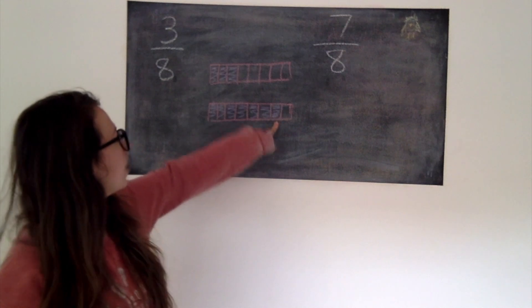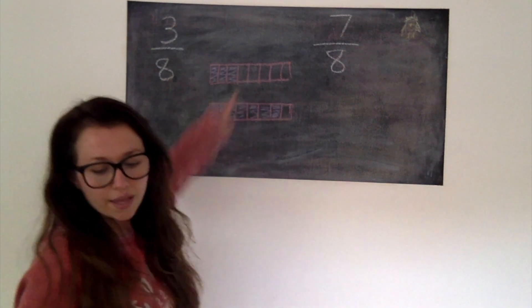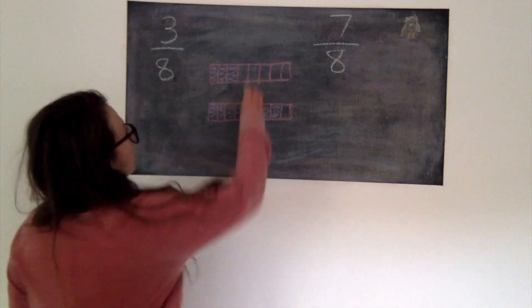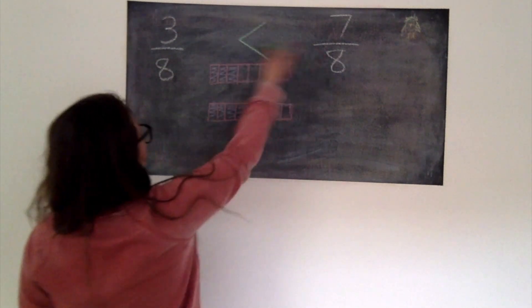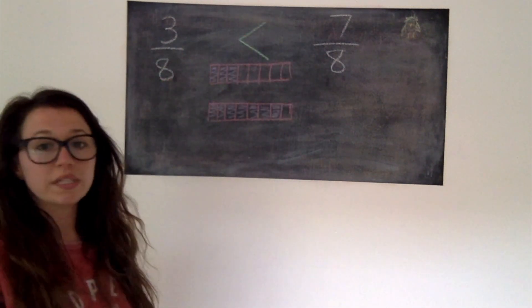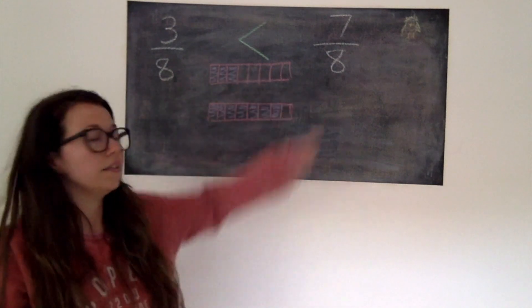I've got 7 out of 8 pieces whereas this one was only 3 and so therefore we would say that 7/8ths is greater than 3/8ths or we could say 3/8ths is less than 7/8ths.